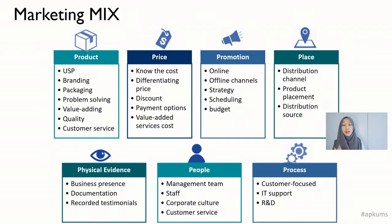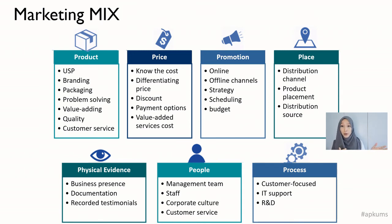The next one is process — the last P. The process determines how you deliver your product to your customers. For example, in the hotel industry: the process from the customers arriving at the hotel until they leave. From their car door being opened, they are led to the check-in process, then somebody leads them to their room, they go throughout the hotel and experience things, until they leave. What happens after they leave? Do they get good customer service or a follow-up process afterwards?